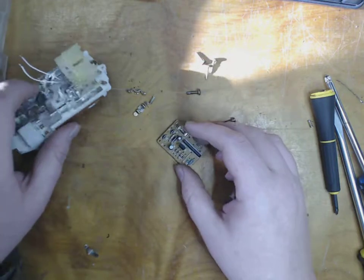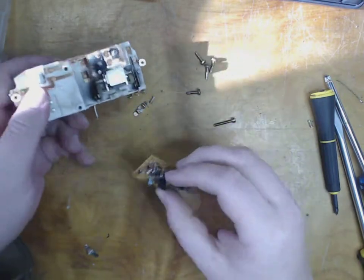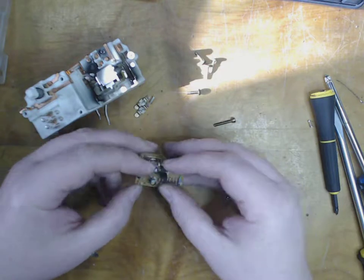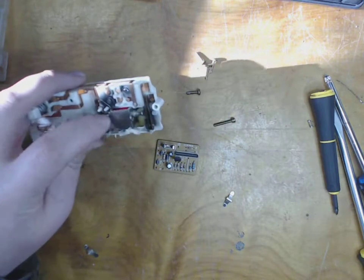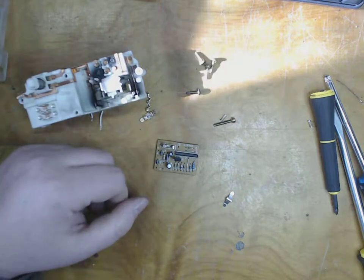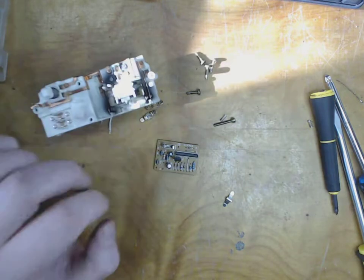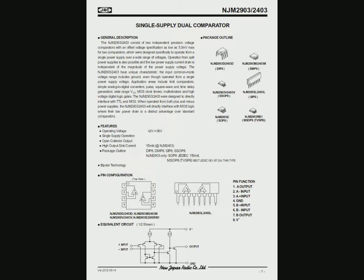Now what's interesting is that it looks like the solenoid goes both ways. How are they doing that? Is there like an H-bridge in here? It's possible that it's only driving it one way but has the provision to go both ways for the auto up feature which my truck doesn't have. That package is a dual comparator.